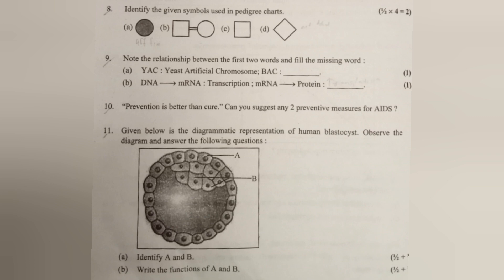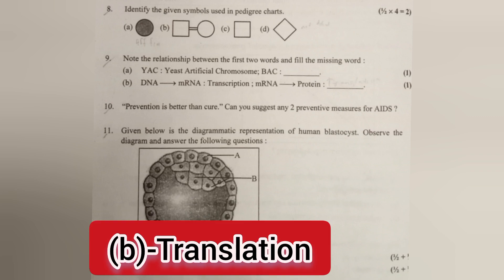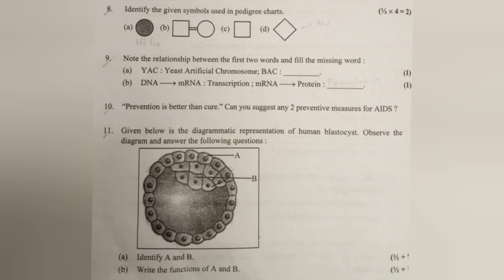BAC — answer: Bacterial Artificial Chromosome. Question 10: Prevention is better than cure. Suggest any two preventive measures for AIDS. Answer: